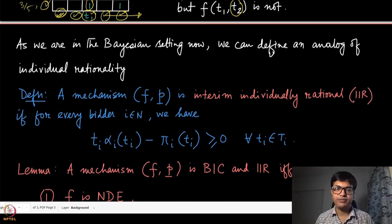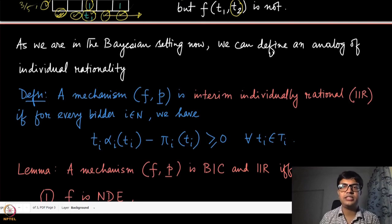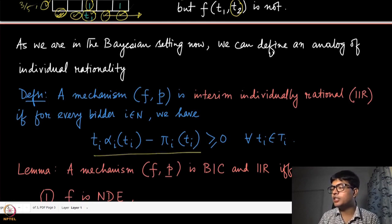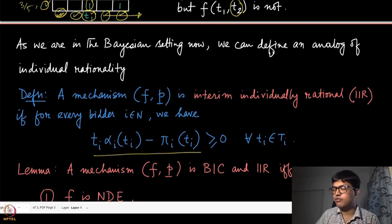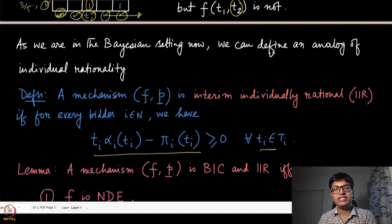In the Bayesian setting, we can also define the analog of individual rationality. A mechanism is interim individually rational (IIR) if, after agent i has observed its own type but is still uncertain about others' types, the expected utility is always non-negative at the interim level for all types of that player. So the agent, upon observing its own type and deciding whether to participate, should always find participation beneficial according to its beliefs.